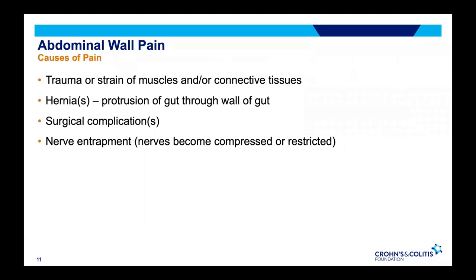Pain in the wall of the abdomen can also be an issue, related to a variety of factors. Trauma, direct hits, or surgery can lead to this. Straining the muscles and connective tissues in your abdominal wall can also cause problems. After surgeries, people can develop hernias or other complications including abscesses. Over the long haul, nerve entrapment — where nerves passing through abdominal wall muscle and connective tissue get squeezed or irritated — can result in pain.